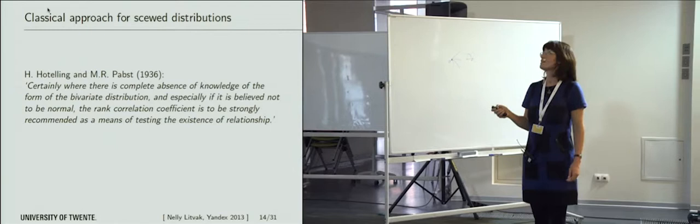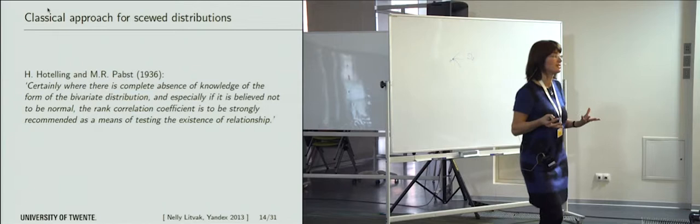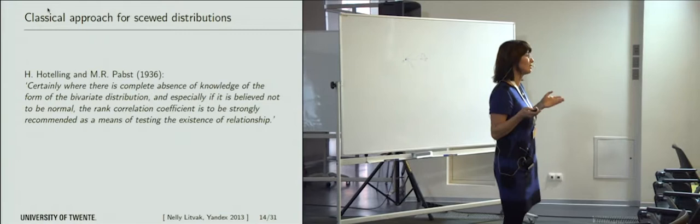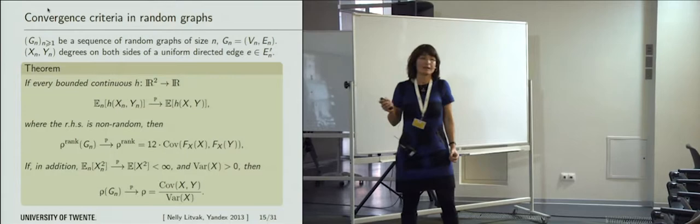The fact that you should apply rank correlation in this setting is known for a really long time. Already in the 1930s, Hotelling and others, when they introduced rank correlation, said that if observations do not come from a normal distribution, then rank correlations are preferable to the Pearson correlation coefficient. In fact, Pearson correlation coefficient is only strictly appropriate for normal distributions. So this is a classical measure.